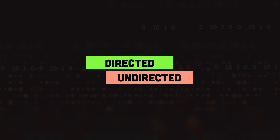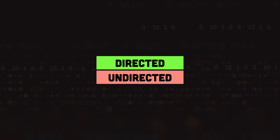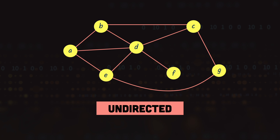A graph can either be directed or undirected. The graph we previously looked at was an undirected graph. In an undirected graph we have no direction tied to the edges, so we don't have any direction on any of the edges. We can travel from any node to the adjacent node and back. For example, we can travel from node A to node B and back, from node A to node D and back, and from A to E and back.